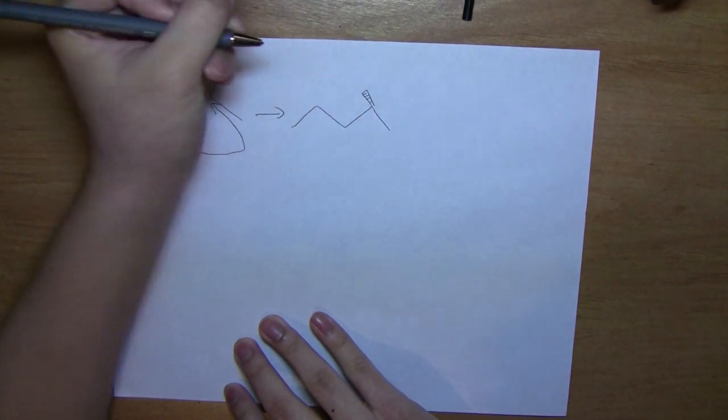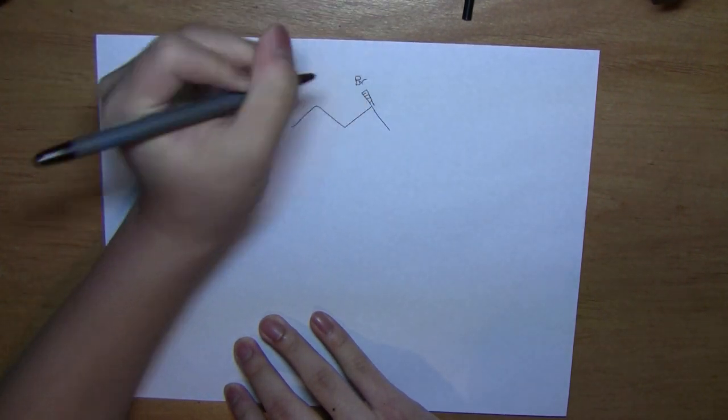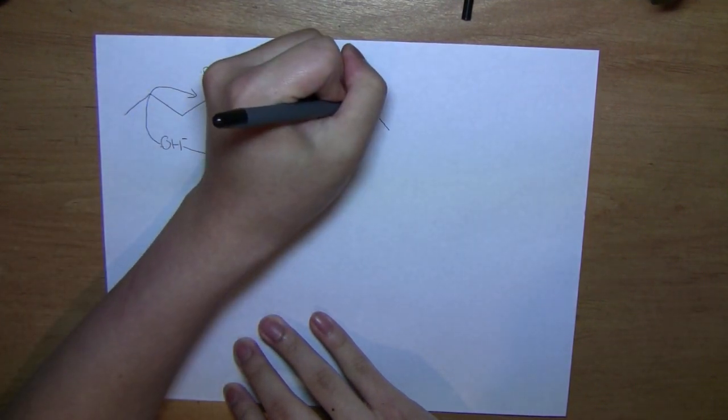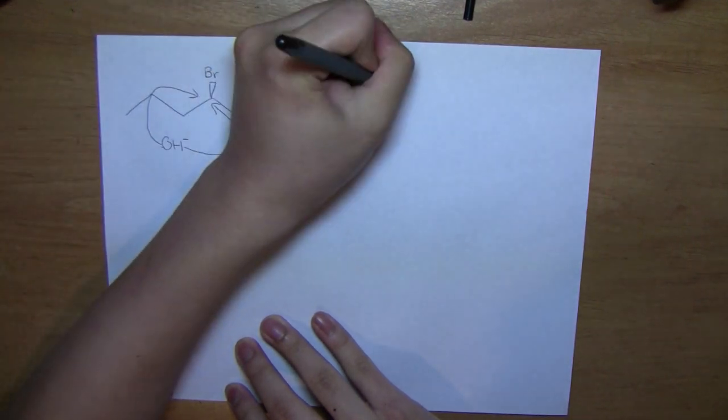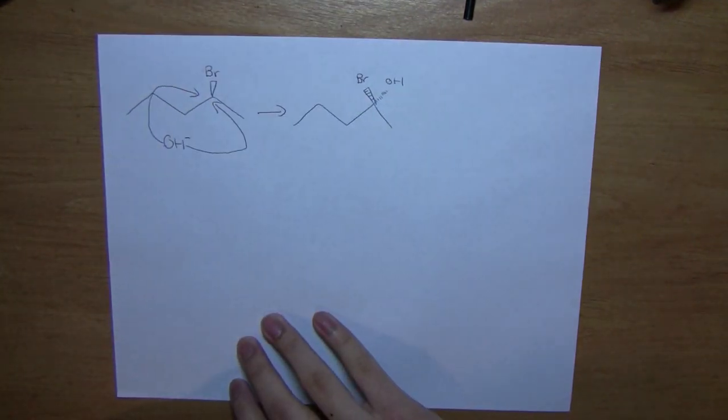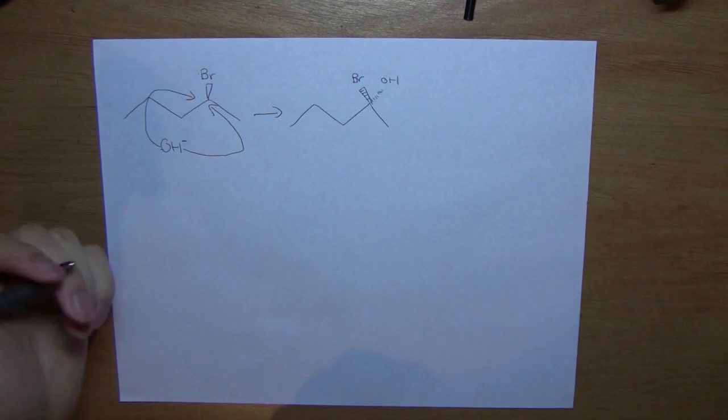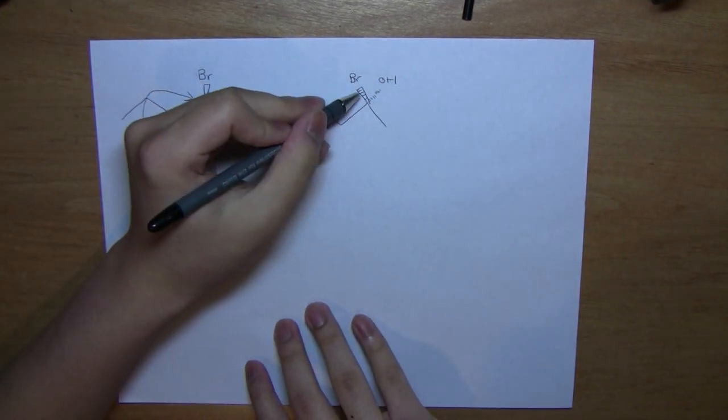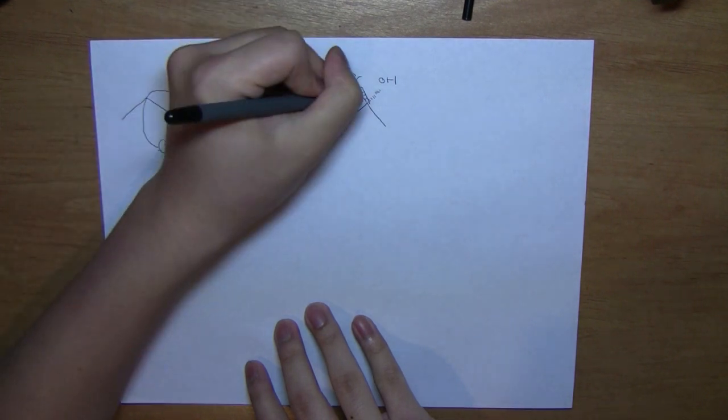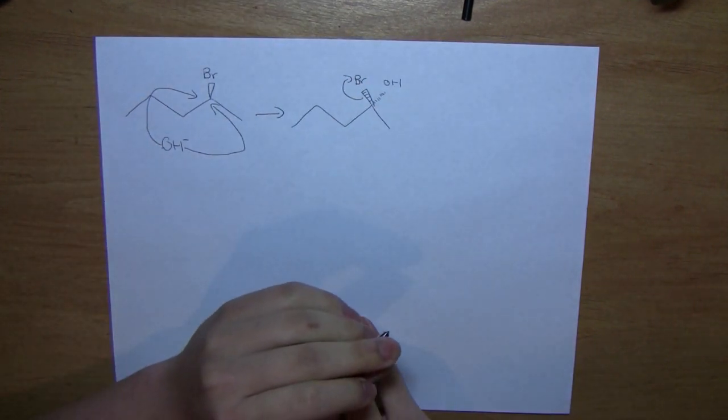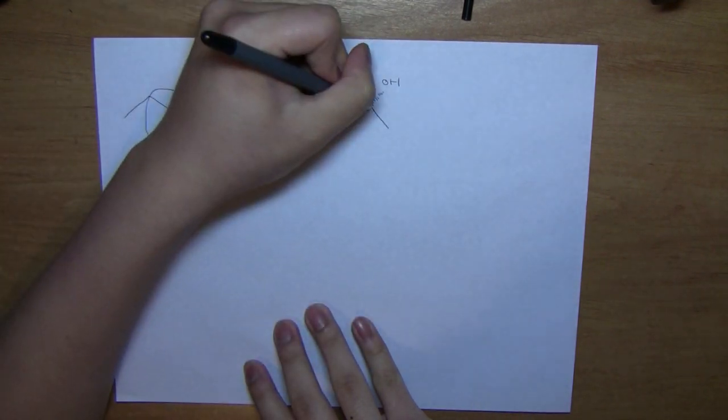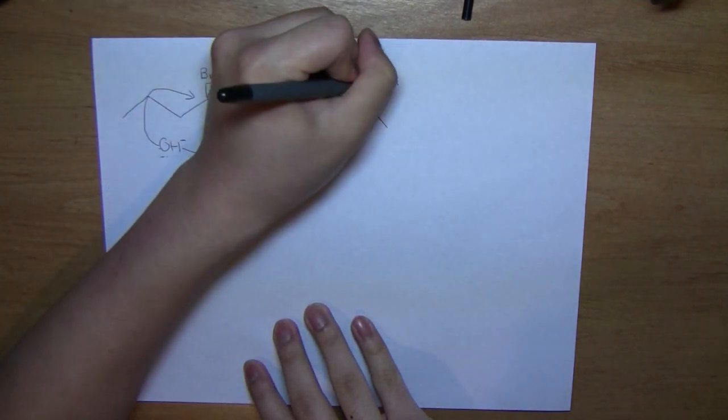So excuse my notation, but this here represents a partial bond coming out of the paper. And this represents a partial bond going into the paper. Now the final step in this reaction is which we have the electrons from the carbon-bromide bond go towards completely the bromide. And we have the valence electrons from the hydroxide help form a bond between the carbon and oxygen, like so.